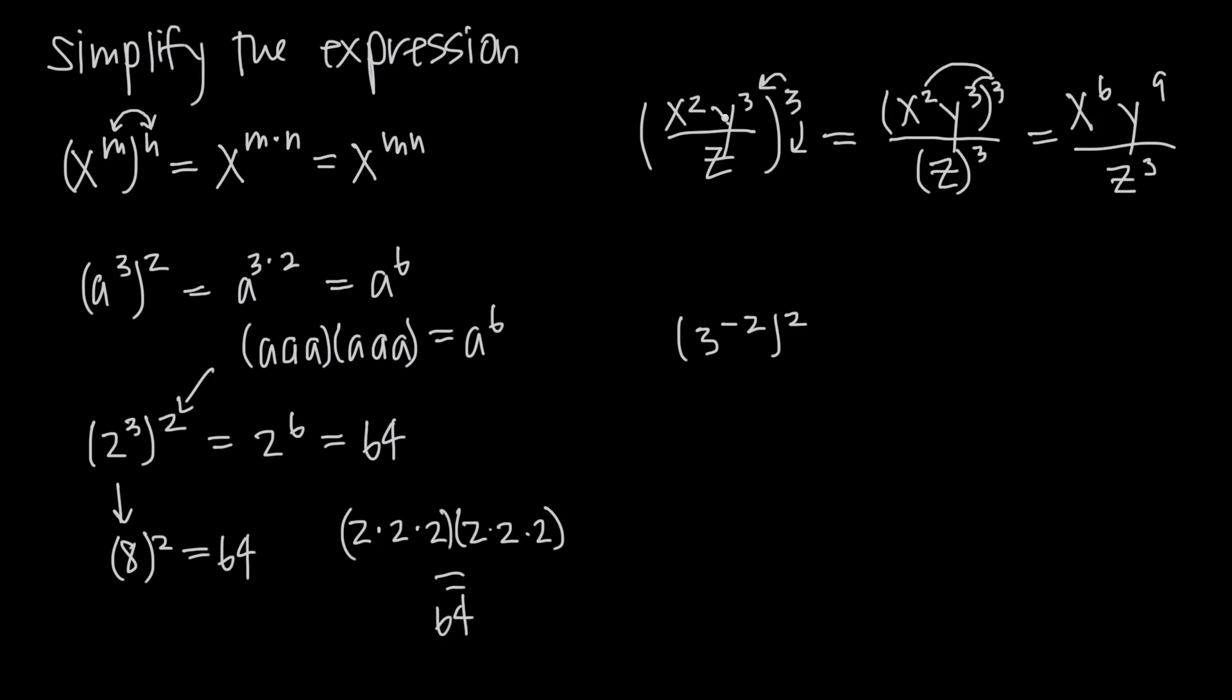Remember, if you're not sure about that numerator, you could have written out the factors, so we had a factor here of x squared y cubed, so x squared y cubed is our factor, that's what's inside the parentheses, but then the exponent tells us we have three of them, so we write out three of them: x squared y cubed, x squared y cubed, and then if we just rearrange here, we put all of our x's together.